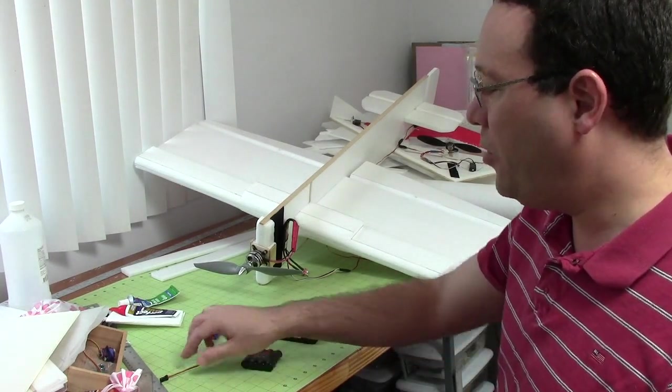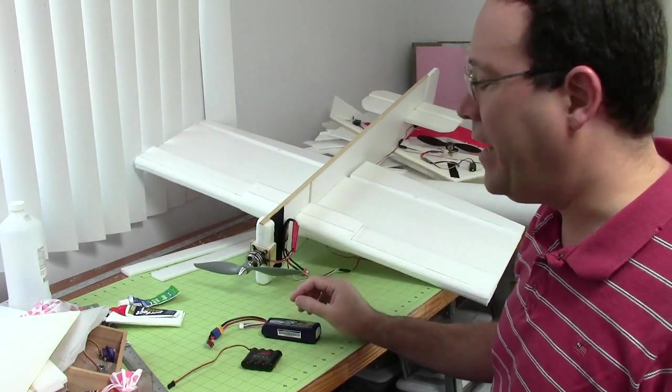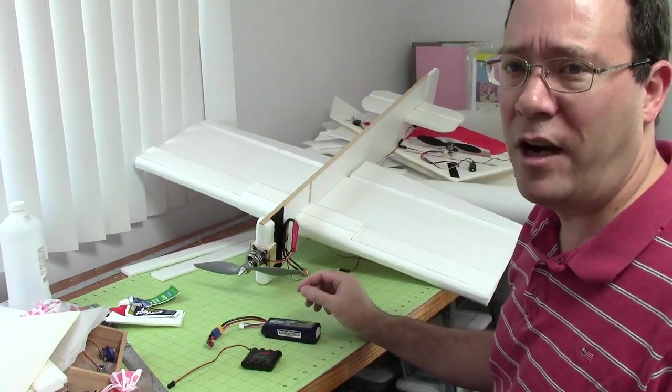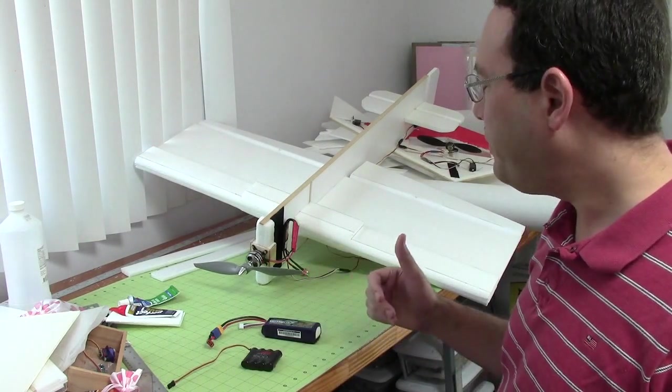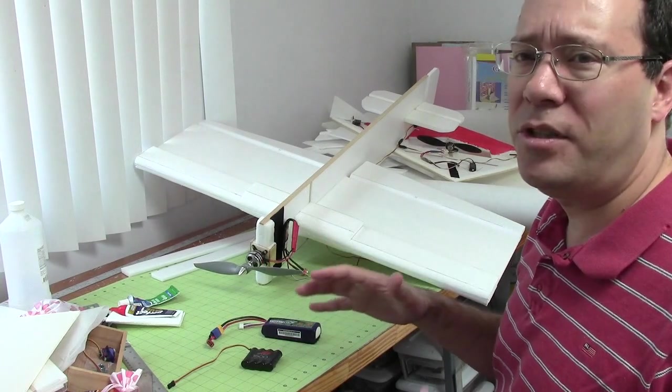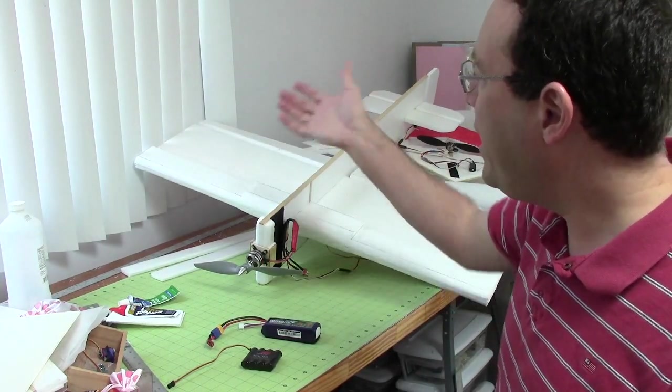But there's another reason for doing the weight computation. There's a formula that I use a lot. It's in my first book, the Model Airplane Design book. And it's called the Scale Factor Formula. And the inputs to that formula are the wing span, which you almost always know, wing area, which you almost always know,